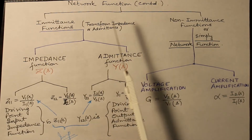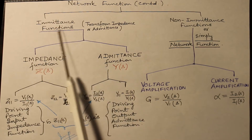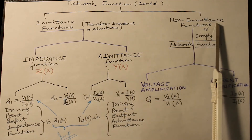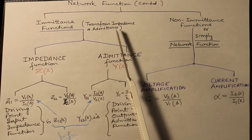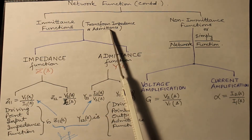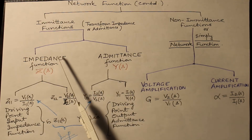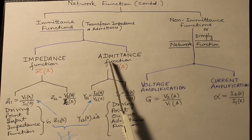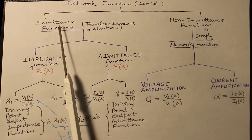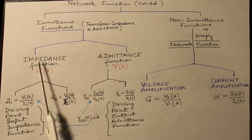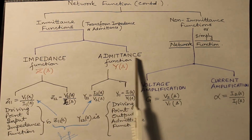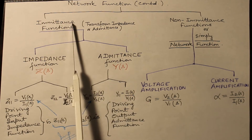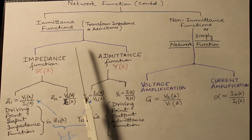Network functions can be classified into two categories: imittance functions and non-imittance functions. Imittance functions are also known as transform impedance or transform admittance functions. Under it, you have impedance function and admittance function. The word imittance has been coined by combining impedance and admittance together.